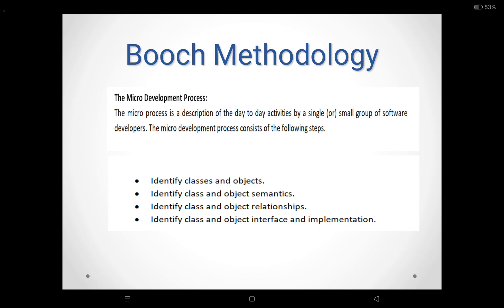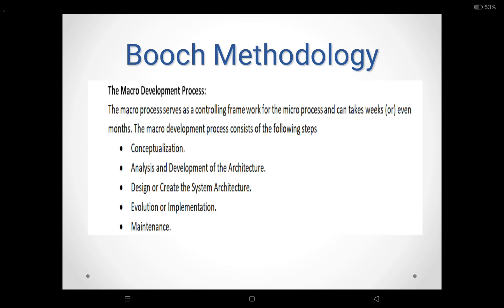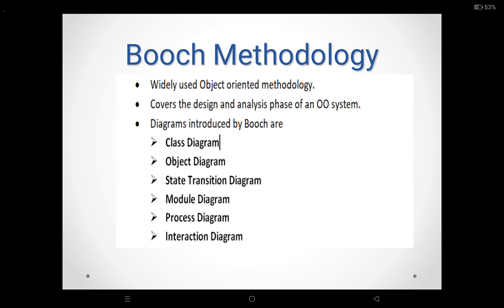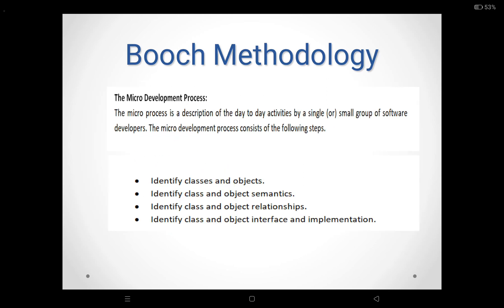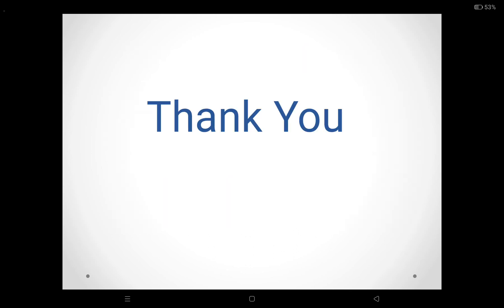Every macro process has its own micro development process. The macro development process handles the technical management of the system, while the micro development process covers the day-to-day activities by a single or small group of software developers. Thank you, students.